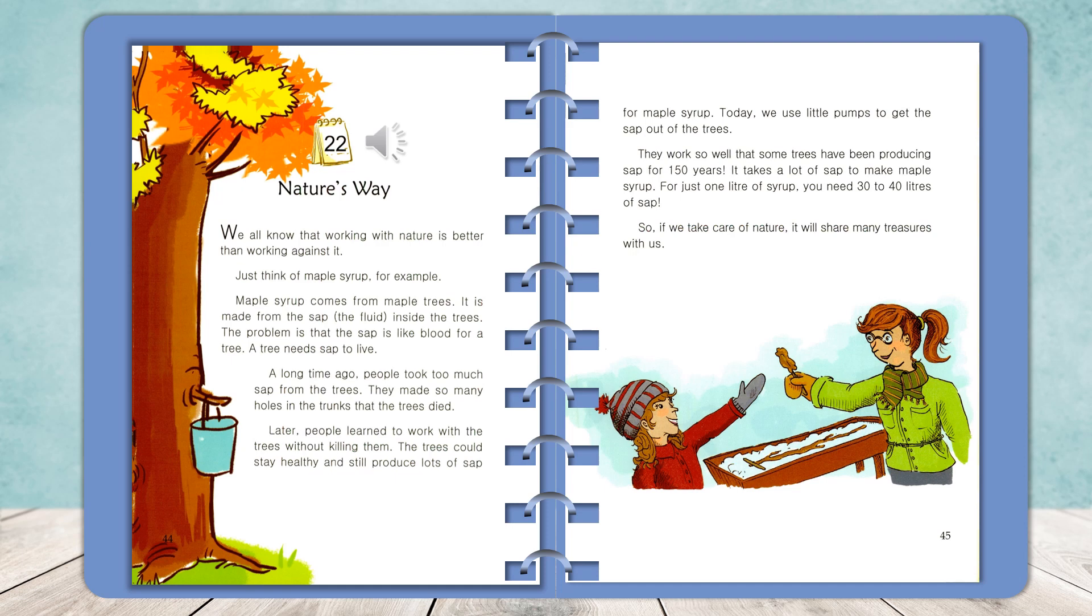Maple syrup comes from maple trees. It is made from the sap, the fluid inside the trees. The problem is that the sap is like blood for a tree. A tree needs sap to live.